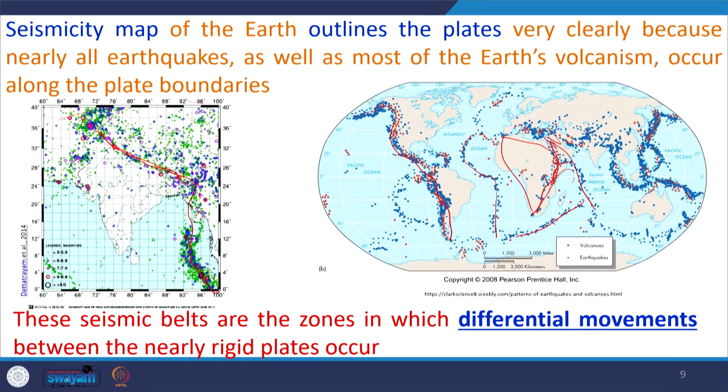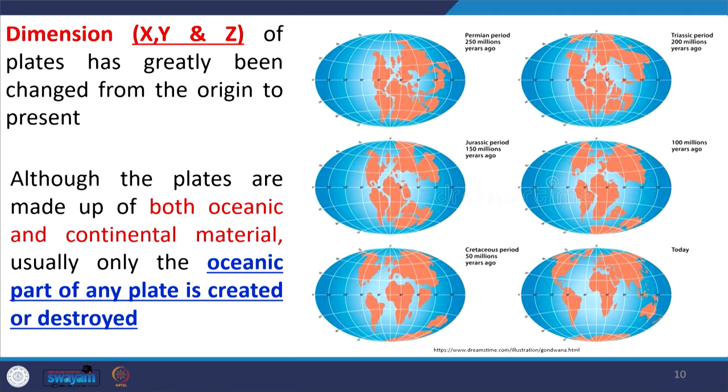Seismic belts are zones in which differential movement between the nearly rigid plates occurs. If plates have been moving from the Precambrian to recent times, what has actually changed? It is the dimension of the plate that has changed — X, Y, and Z. X and Y represent areal extension and Z represents thickness change. In the Precambrian, the Earth's crust or lithosphere was very thin and plate motion was very rapid.